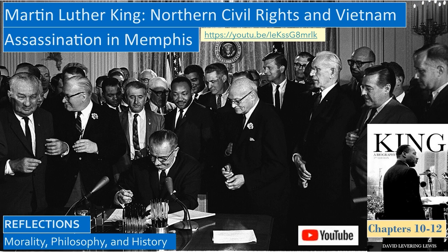Martin Luther King then turned his attention to staging protests in Chicago to publicize the poverty of northern African Americans and the substandard multi-story housing in the big city ghettos. Johnson coordinated his legislative efforts with these protests to formulate additional civil rights legislation. But Martin Luther King's life was cut short when he was assassinated in Memphis while supporting the black sanitation workers' strike. Less than a month after his assassination, LBJ signed the Civil Rights Act of 1968, which forbade racial discrimination in renting or selling homes.